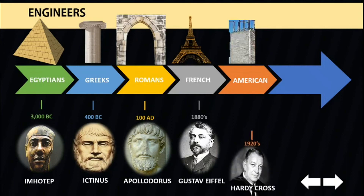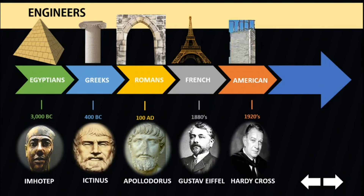Hardy Cross, in the 1920s, introduced moment distribution, where engineers acquired a relatively simple technique for analyzing continuous structures. As they became familiarized with moment distribution, they were able to analyze indeterminate frames, and by that, the use of reinforced concrete as a building material increased rapidly. The introduction of welding was made known during the late 19th century, primarily used in joining steel members, eliminating the use of heavy plates and angles required by earlier riveting methods.